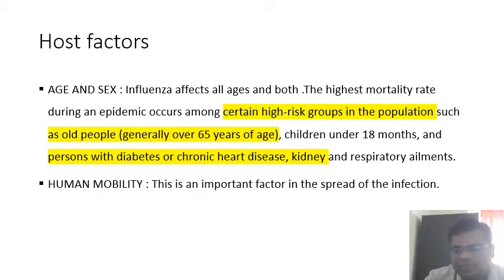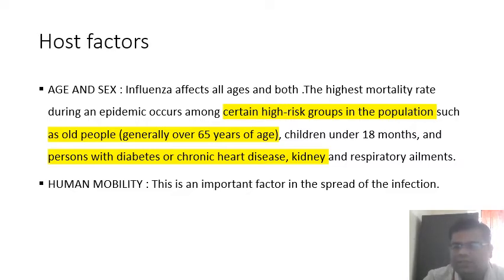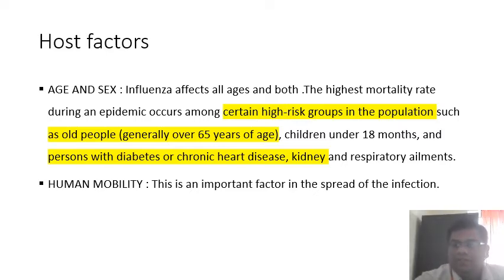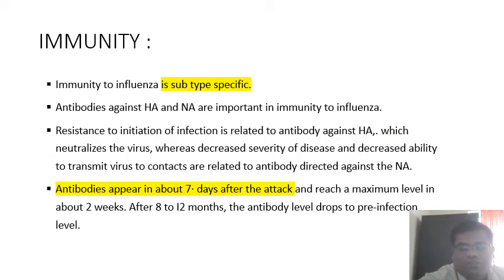The factors that influence host susceptibility are important. The highest mortality rate is seen in certain high-risk groups: those more than 65 years of age, children under 18 months, and persons with diabetes or chronic heart disease. In terms of spread, international travel helps in faster spread of the epidemic or pandemic.